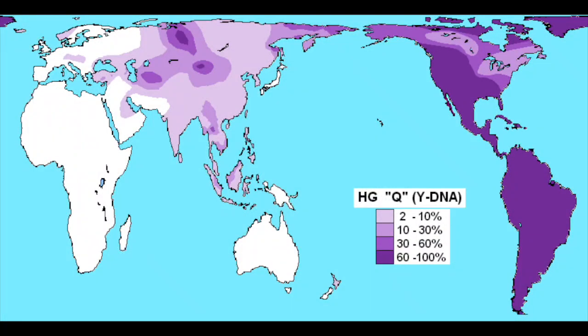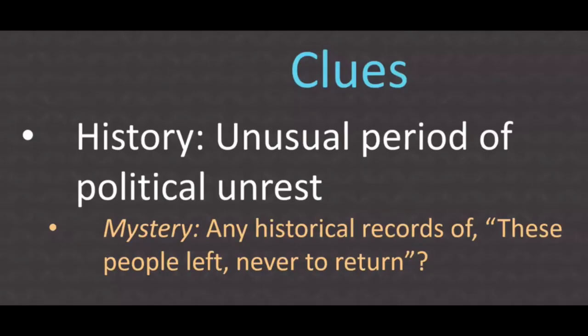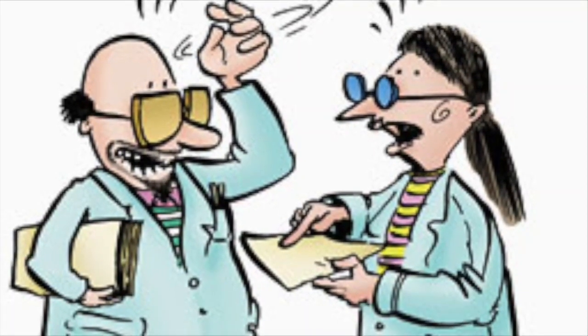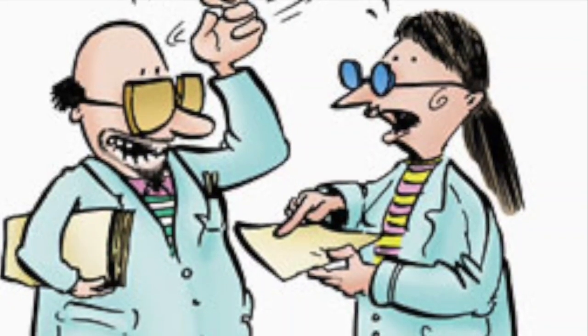Since genetics has shown us that Native Americans are of Asian descent — more on that soon — we have to look to Asia to see what events may have caused a migration away from Asia, and in what direction they might have gone to determine the actual model, not just throw out a random number without any evidence.